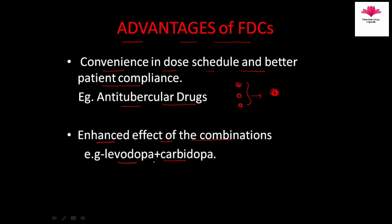For example, levodopa plus carbidopa, this combination is given in Parkinson's disease. It is a central nervous system disease and we want levodopa to go into the CNS and provide dopamine. The problem is that levodopa is converted mostly into dopamine in peripheral tissue. Carbidopa prevents its peripheral conversion into dopamine, making more levodopa available to the CNS, so the dose of levodopa is reduced by nearly 75 percent when given with carbidopa.